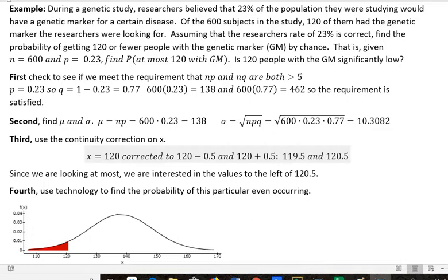Well, before you do that, you have to make sure that we meet the requirement that N times P, N is the number of people in the study, is your number 600, times the probability, and P is the probability of success, which is in this case 0.23, which doesn't sound like success if you have a bad genetic marker, but that's how we're counting it. And then the 600 times Q, which is the probability of failure, which would mean they don't have it. And both of those have to be greater than or equal to 5. Okay, so the probability is 0.23 P, so Q is 1 minus 0.23 or 0.77. So we take 600 times 0.23 and get 138, and 600 times 0.77 and get 462. So the requirement is satisfied. So we can use a normal distribution for this.